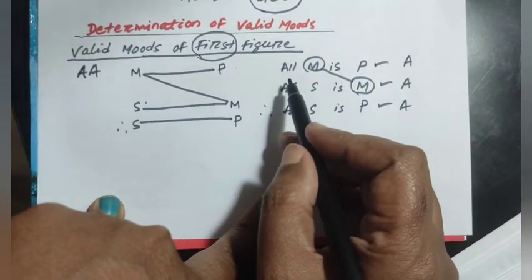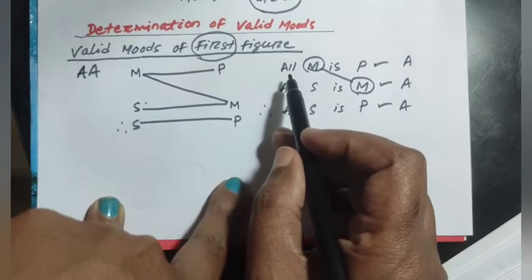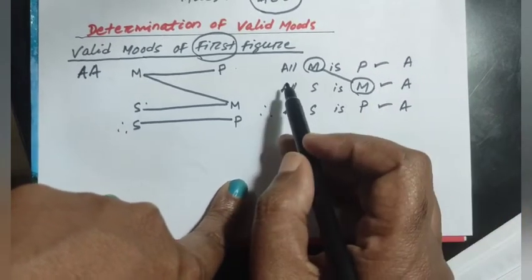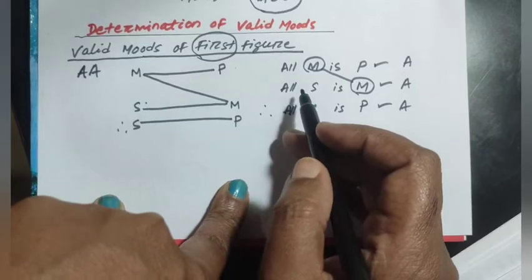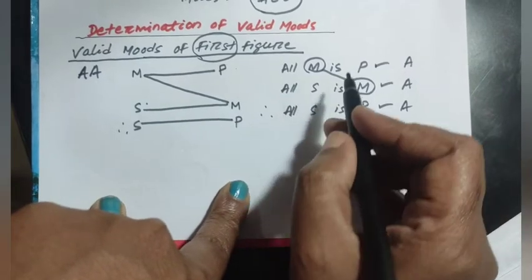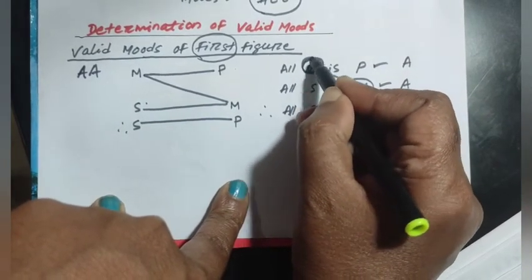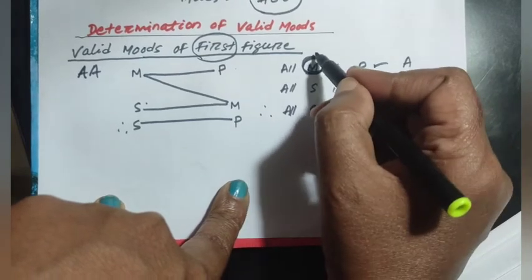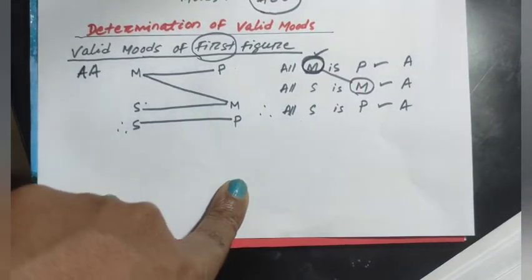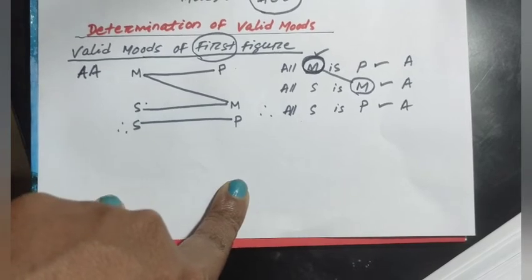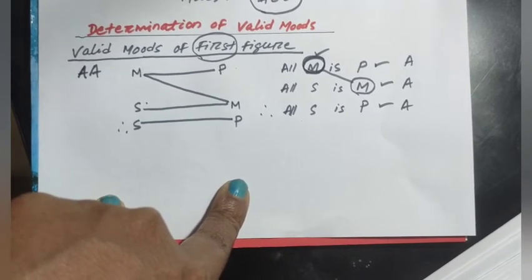We notice that in the first proposition, A proposition distributes its subject. Since the middle term M is the subject of the major premise and A proposition distributes its subject, the middle term is distributed in the major premise. The minor term S is distributed in the conclusion and is also distributed in the minor premise, satisfying the distribution rule.